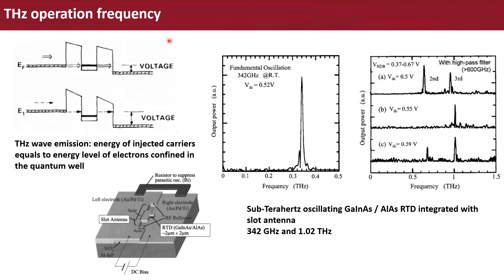Another important feature of the resonant tunneling diode is its terahertz operation frequency. In a double barrier structure, carriers such as electrons and holes can only have discrete energy values inside the quantum well. When a voltage is placed across a resonant tunneling diode where the energy of the injected carriers equals the energy level of electrons confined in the quantum well, a terahertz wave will be emitted. As the voltage is increased, the terahertz wave dies out because the energy value in the quantum well is outside the emitter side energy range.